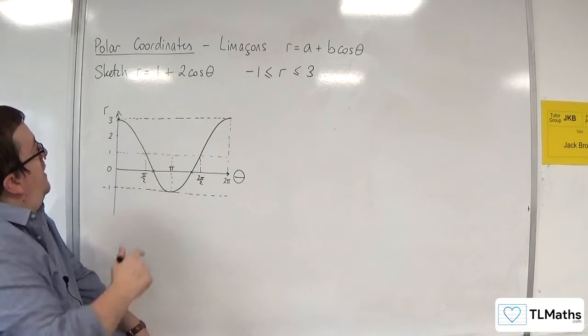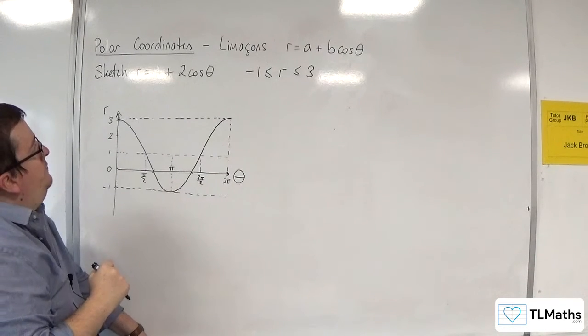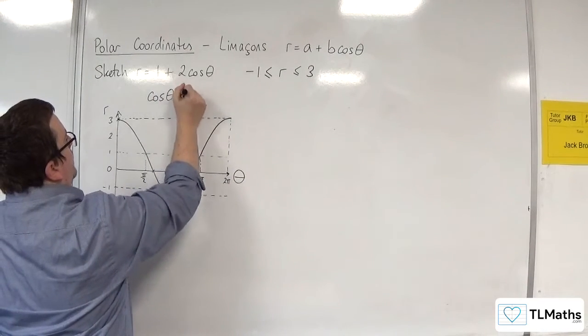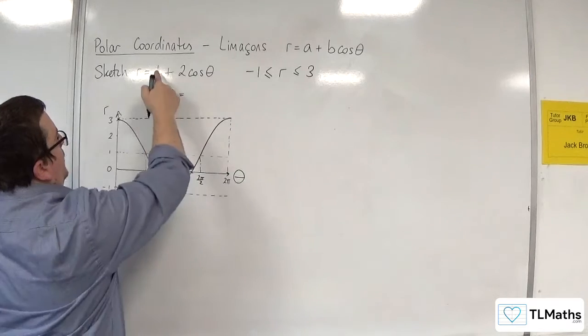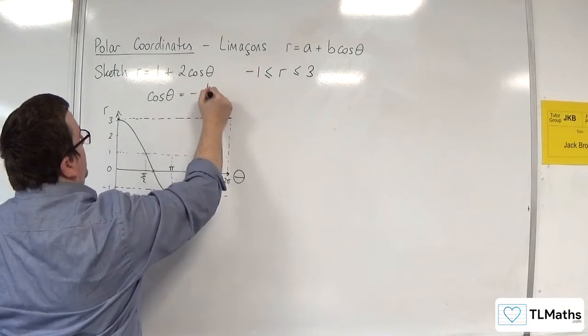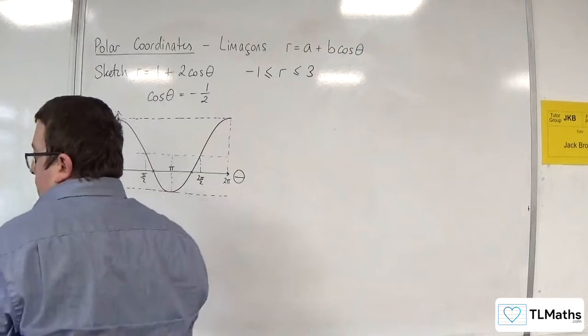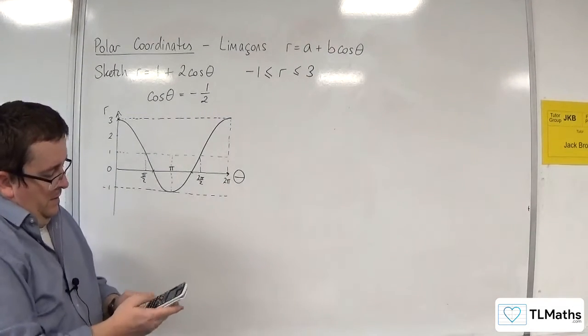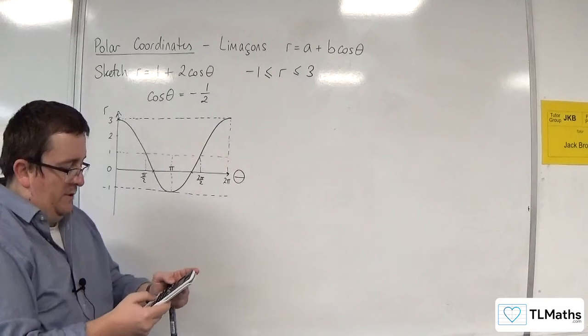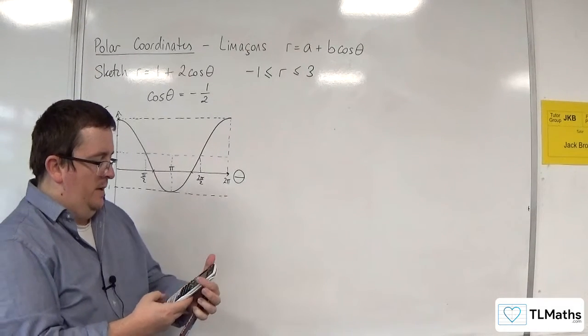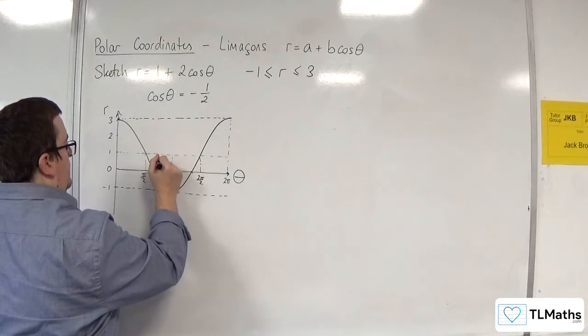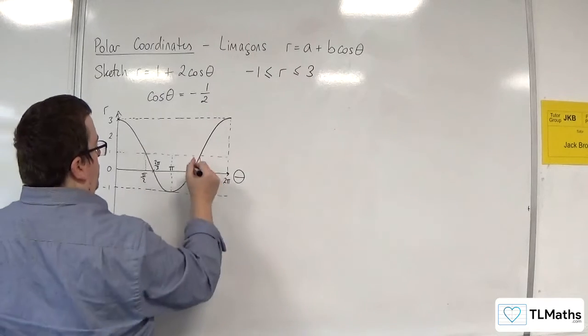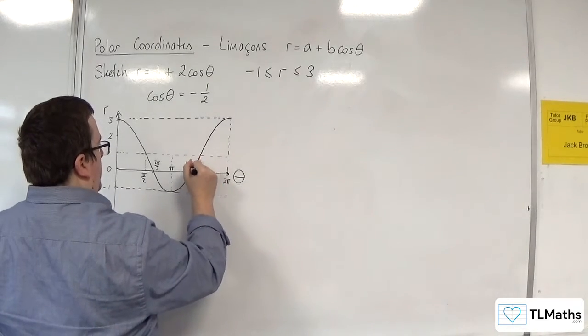So I'd probably be interested in where those points are. And that will be when this is equal to 0. And that will happen when cosine theta is equal to, so take the 1 from both sides, divide through by 2. So we're looking at cosine theta is equal to minus 1 half. So let's just find that out. So inverse cosine of minus 1 half is 2 pi over 3. So that's 2 pi over 3 there. And this point will be 2 pi take away the 2 pi over 3. So 4 pi over 3.